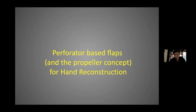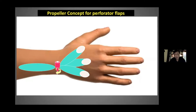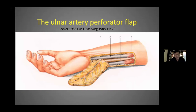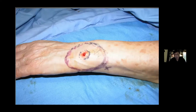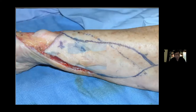Perforator flaps blend very well with the propeller concept for hand reconstruction. You can use it with the donor side being the forearm for the dorsum of the hand and the palm. This so-called Becker flap, described by Corinne Becker, is based on the ulnar artery perforators. The perforator she described was quite consistent, coming out just two to four centimeters proximal to the pisiform. But don't be hung up on that — as I'm going to show you in this particular case where I was planning a Becker flap and when I went exploring...